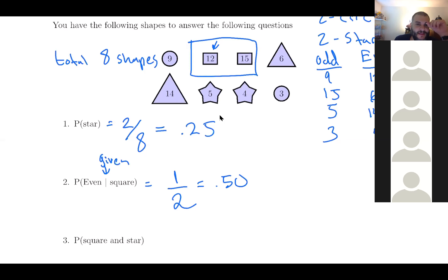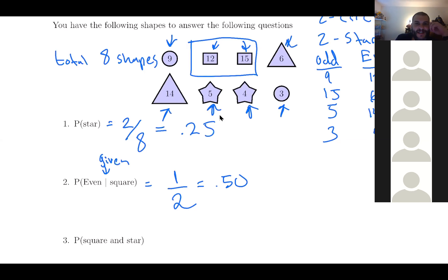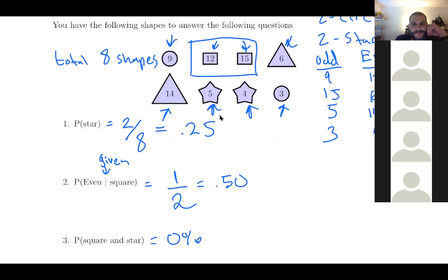For number three: probability of getting a square and a star. If you look at all the shapes, none of them is both a star and a square — you can get one or the other, but it's impossible to get one shape that's both. So this one is zero. Some of you tried the multiplication rule, but that only applies when they tell you multiple selections were made. Here, assume one selection.